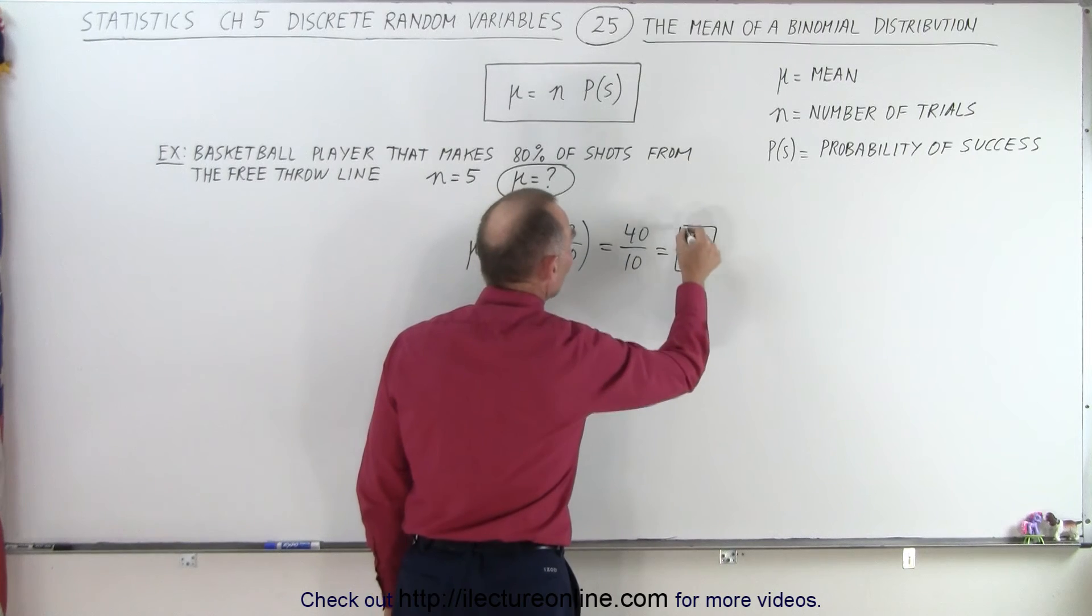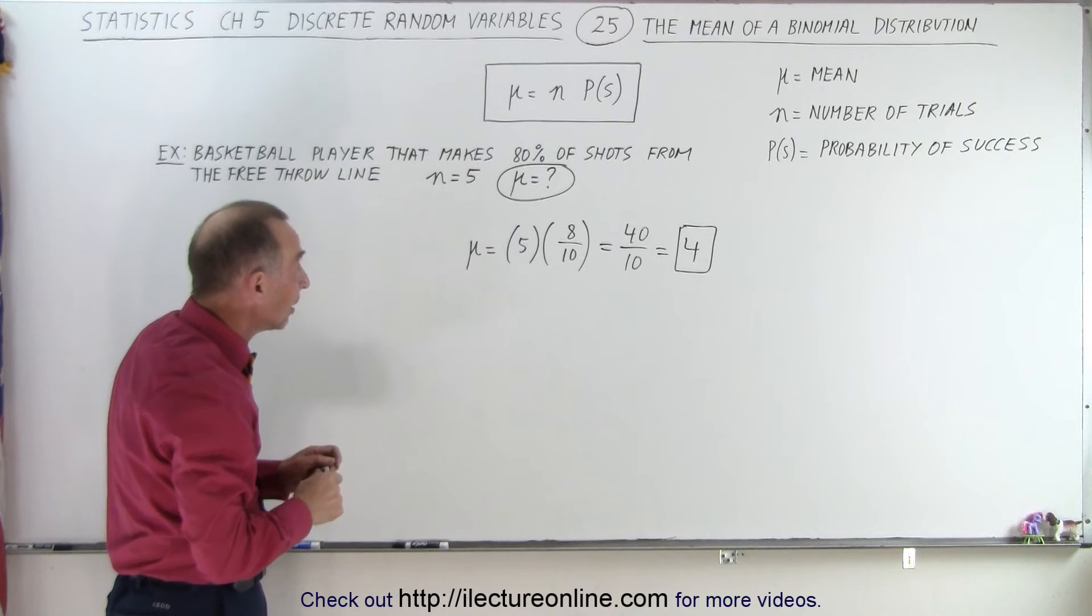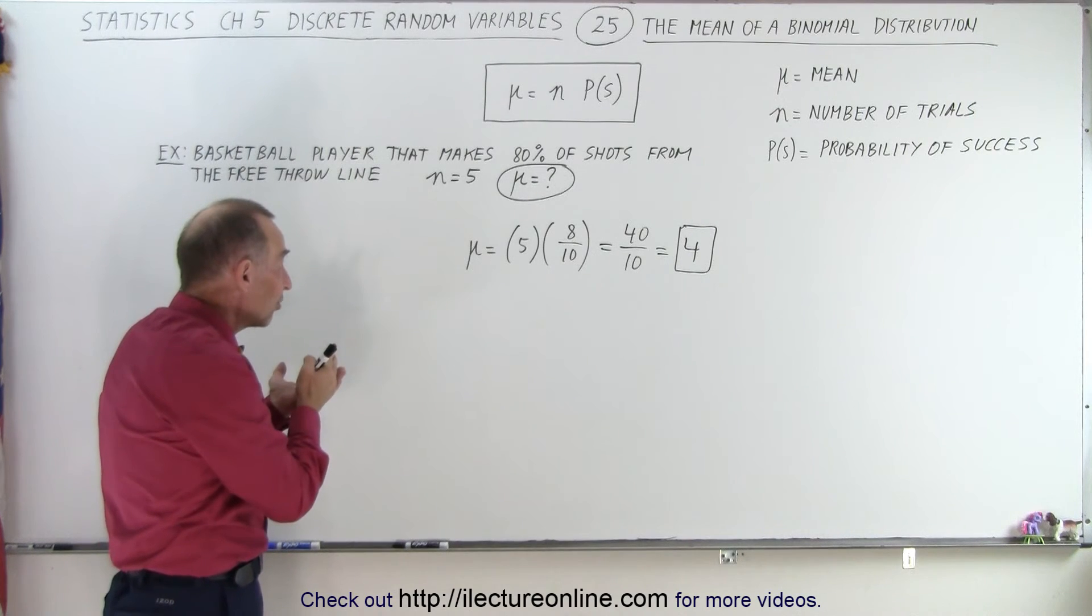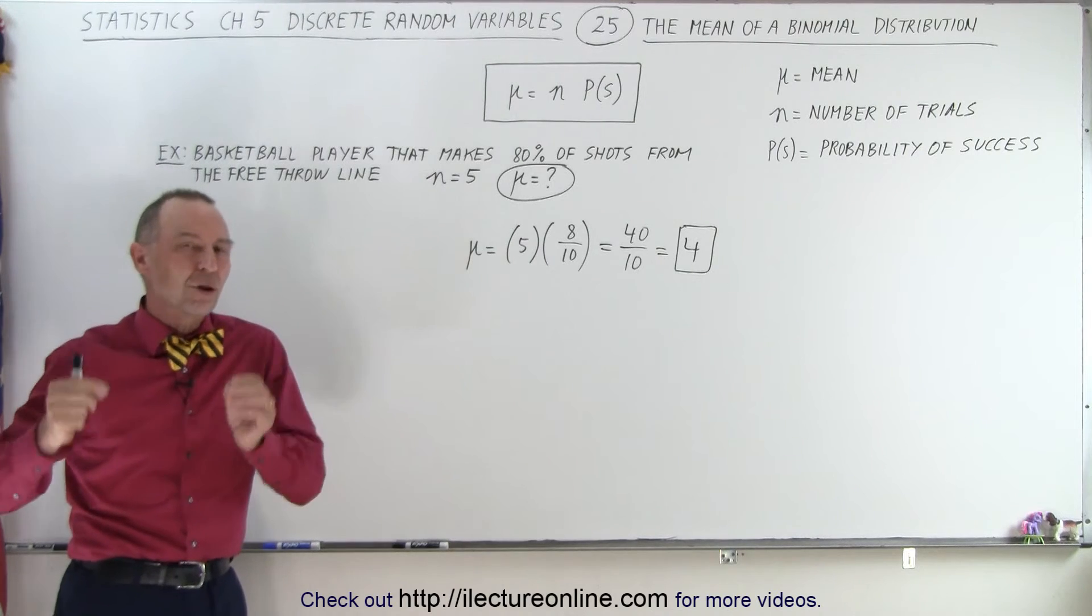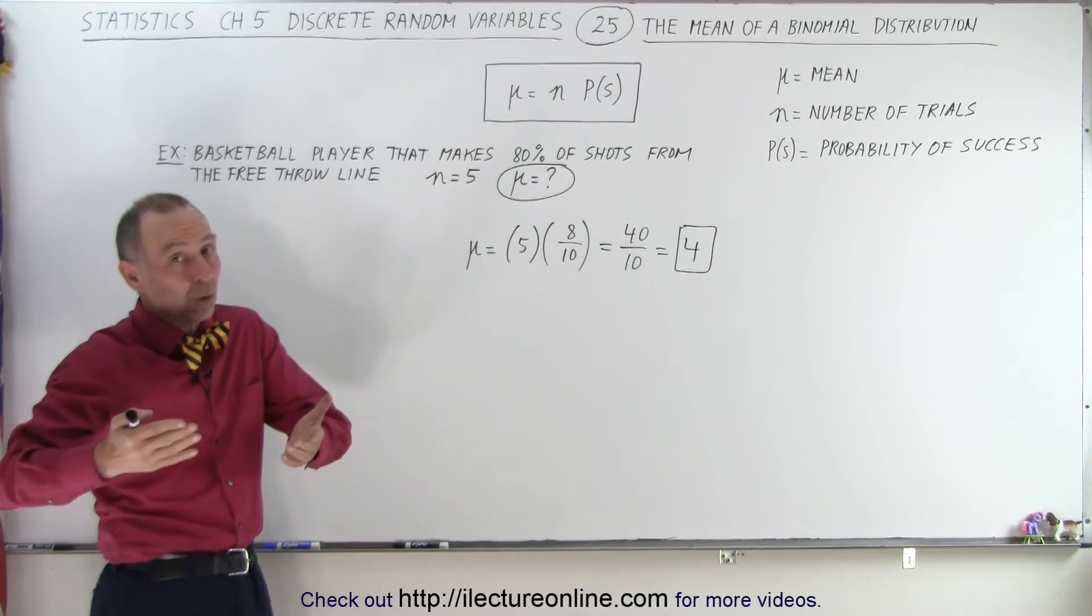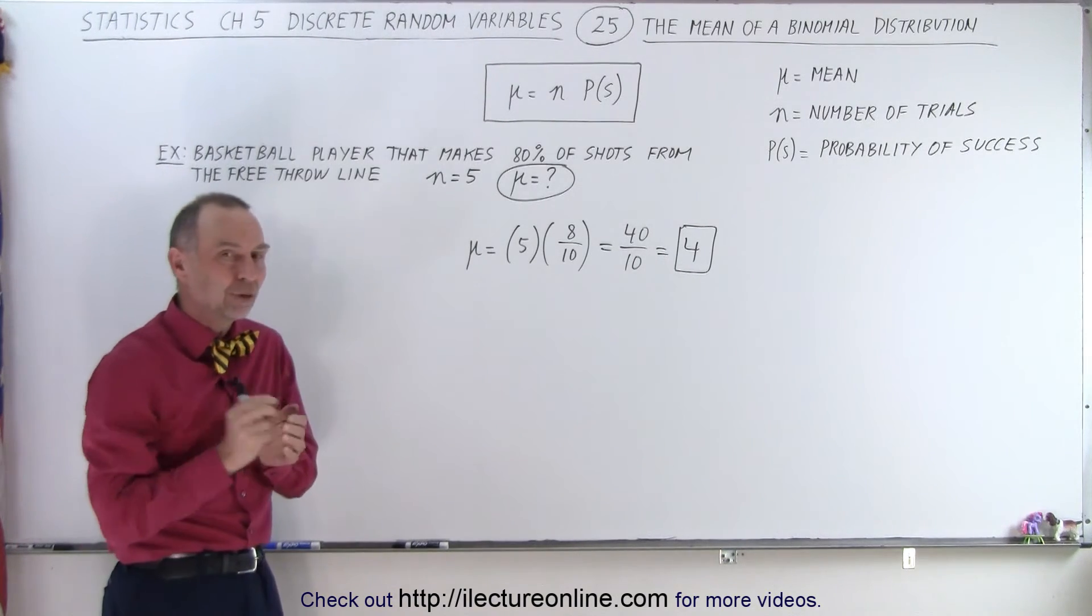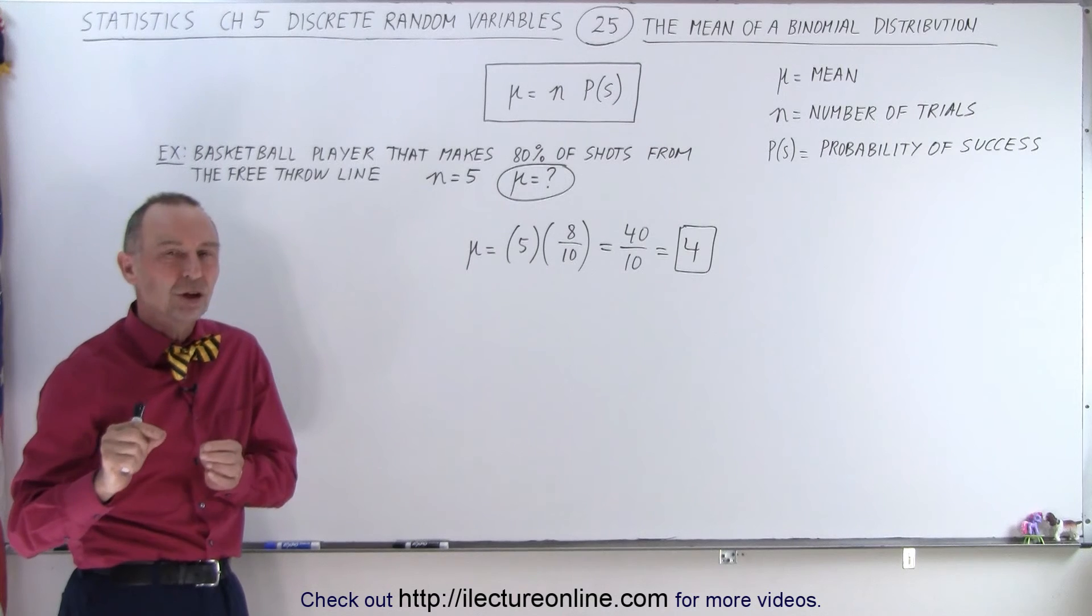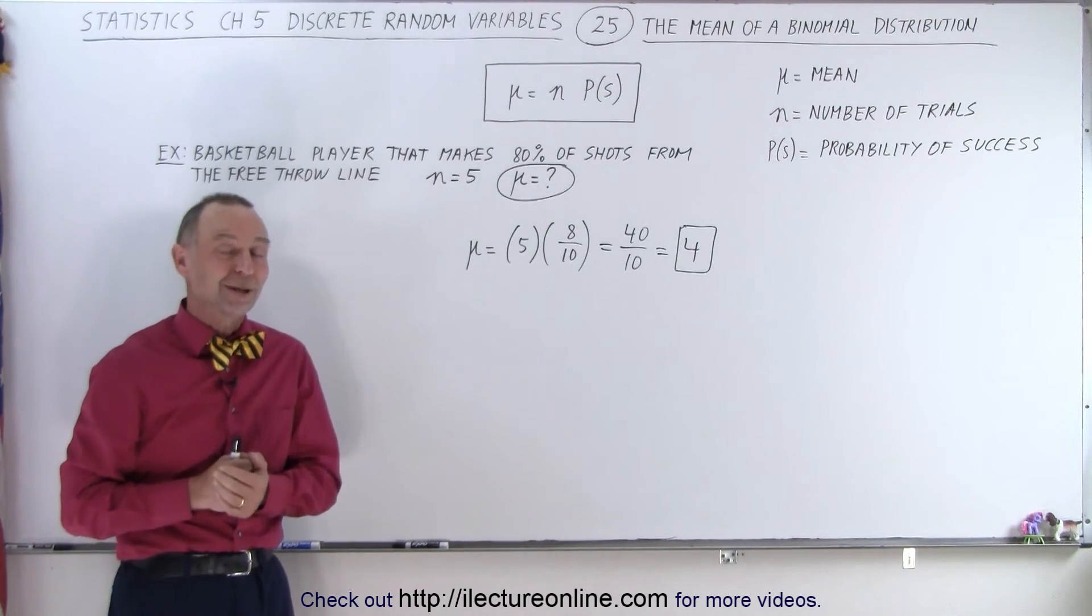So the mean of this binomial distribution is 4. If he attempts 5 shots, he's expected to make 4 on average. Sometimes he'll make more, sometimes less, but on average, this is called the mean of this particular distribution. Four shots will be made on average, and that is how it's done.